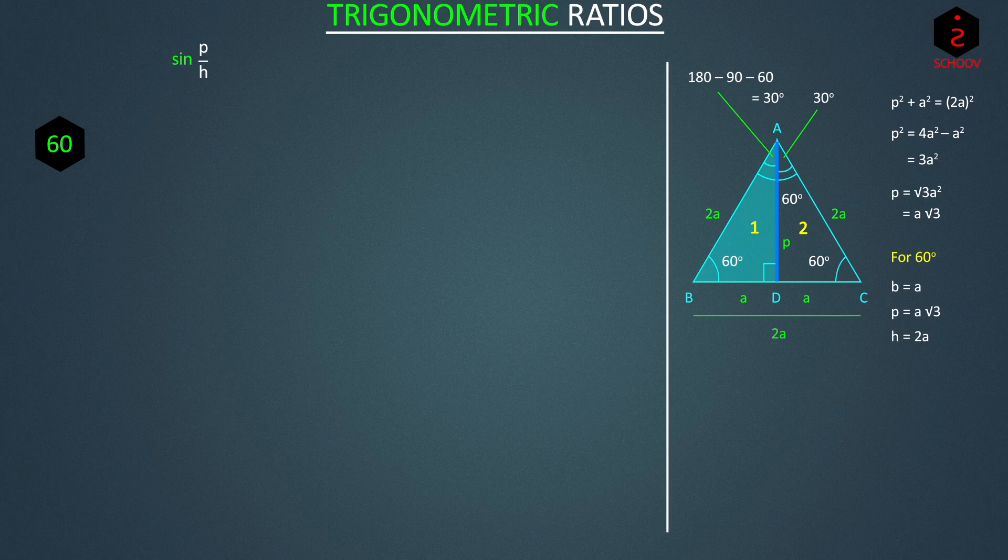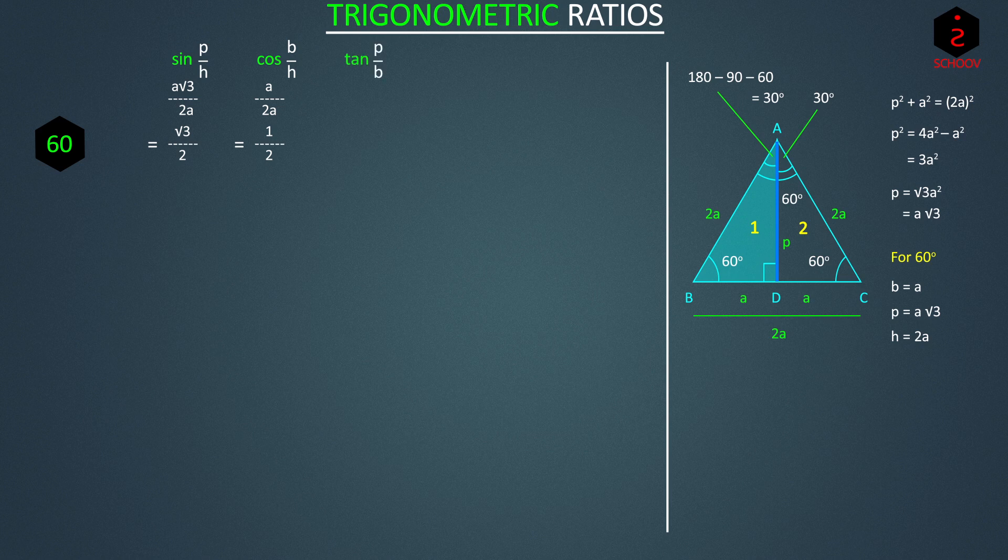So now sin 60 is equal to perpendicular upon hypotenuse. We know perpendicular which is A root 3 and hypotenuse which is 2A. So sin 60 becomes root 3 by 2. Cos 60 is base by hypotenuse, that is A by 2A, 1 by 2. Tan 60 is perpendicular by base, that is A root 3 by A, root 3.